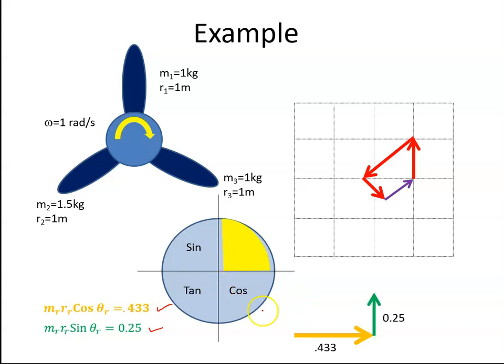So we can draw a triangle. So there's our horizontal component, 0.433, there's our vertical component, 0.25, and there is our resultant, this guy here. And if I want to get that value, well, the square of the hypotenuse is equal to the square of the two other sides, and that works out to be 0.5. So we're going to need a mass times radius of 0.5 kilogram meters.